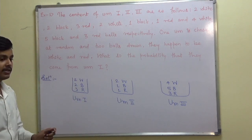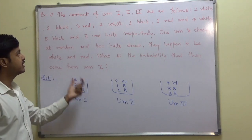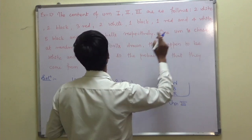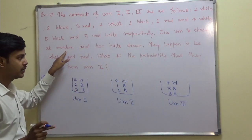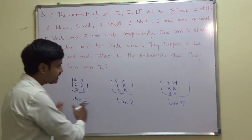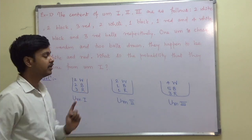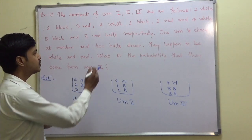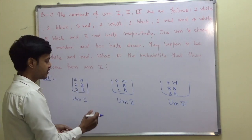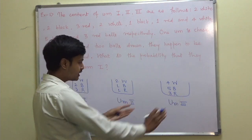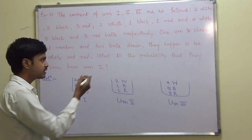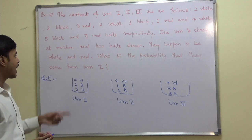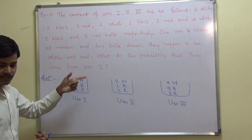Now, it is given that 1 urn is chosen at random out of these 3 urns, and 2 balls are drawn. Those 2 balls happen to be white and red.